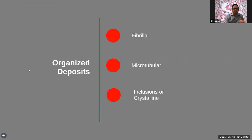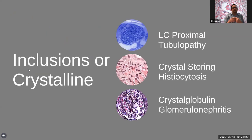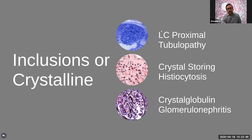Lastly, we have a category of organized deposits with a crystalline structure, containing three main entities. Two are very rare — you may not encounter any in your entire career. But the first one, light-chain proximal tubulopathy, is actually not rare. I want to share a case of that.